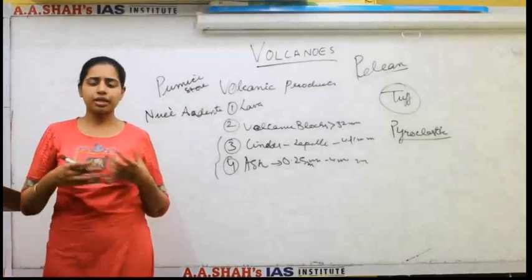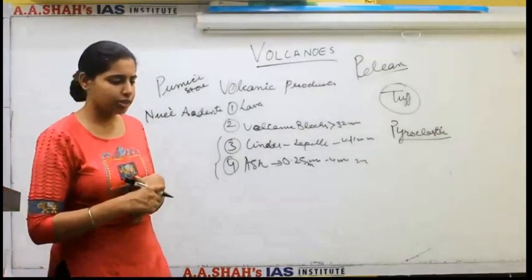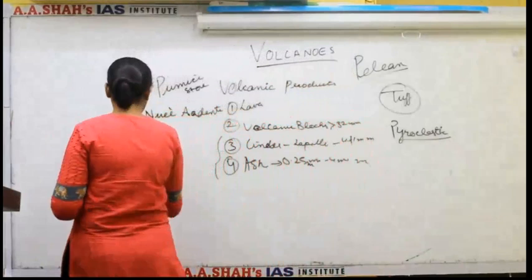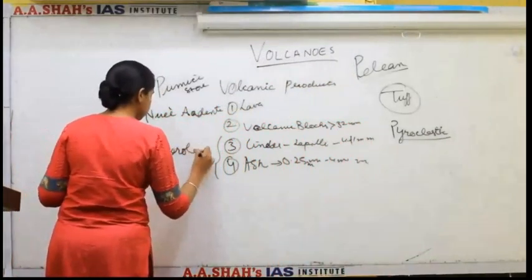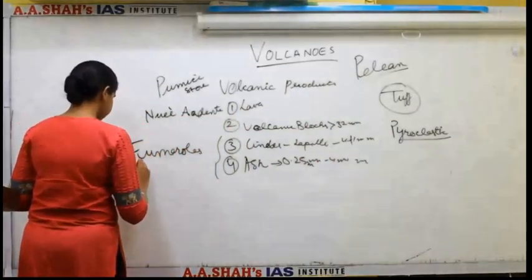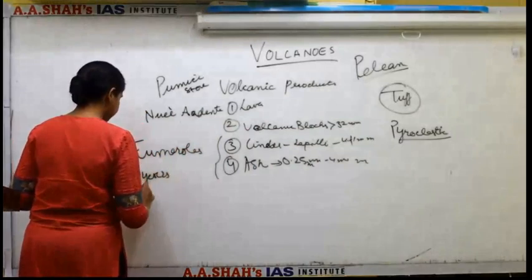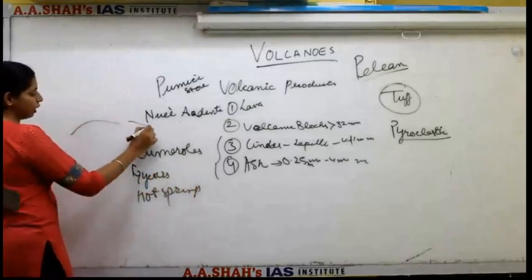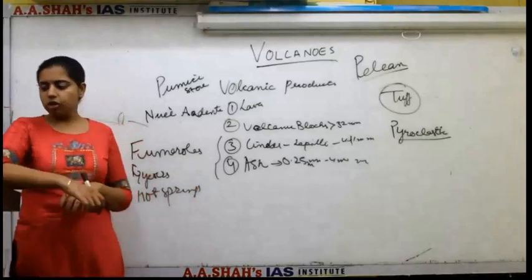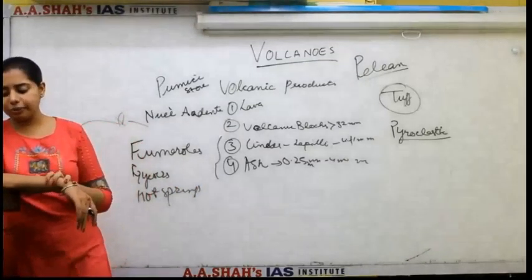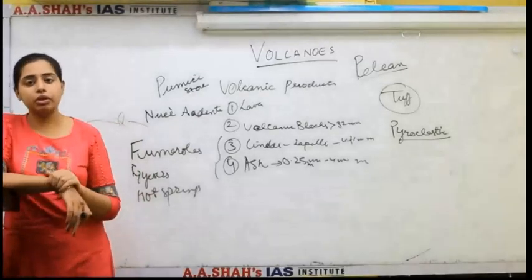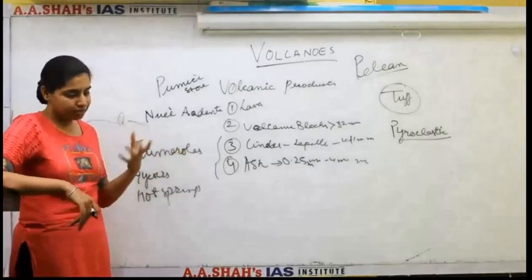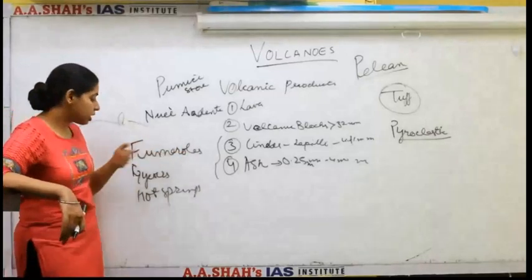Other than this, there are features like hot springs, geysers, and fumaroles — three types of features associated with volcanism. Fumaroles are basically areas near a volcano from which gases can escape. There are many types of fumaroles: some give out carbon dioxide, some give out sulphur, some might give out boric acid. These gases come out in the form of vapour or fumes, which is why they are known as fumaroles.